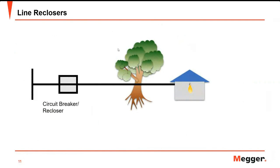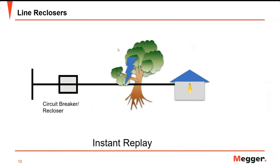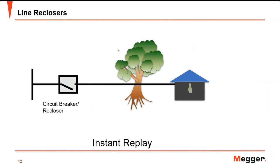Let's review the process of auto-reclosing. The wind blows a tree branch towards the feeder conductors, which causes a line-to-ground fault. The relay senses the fault and trips the breaker. The wind passes and the branch is cleared from the conductors. After a certain time delay — what we call the dead time — the relay issues a close command to the breaker and customer power is restored.